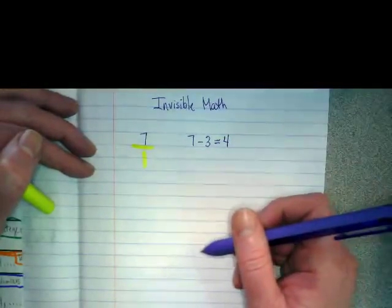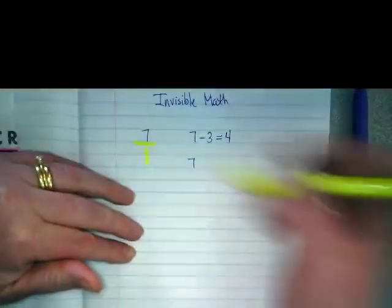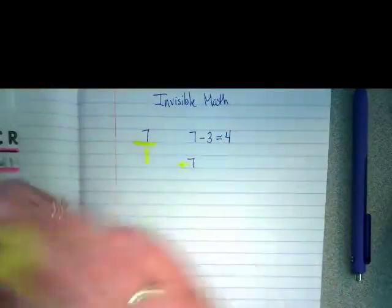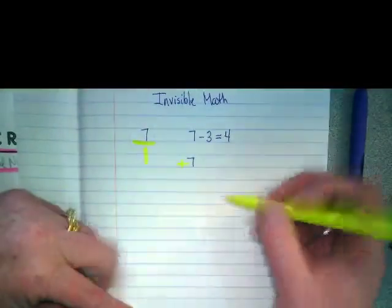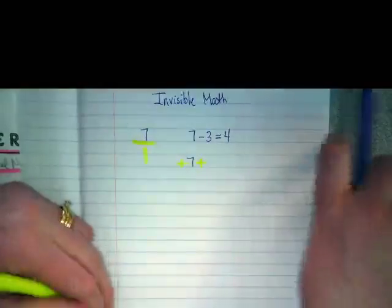Okay, we're going to rewrite this with the invisibles. So underneath it, put that seven. There's an invisible plus in front of it. There's another invisible plus after it.